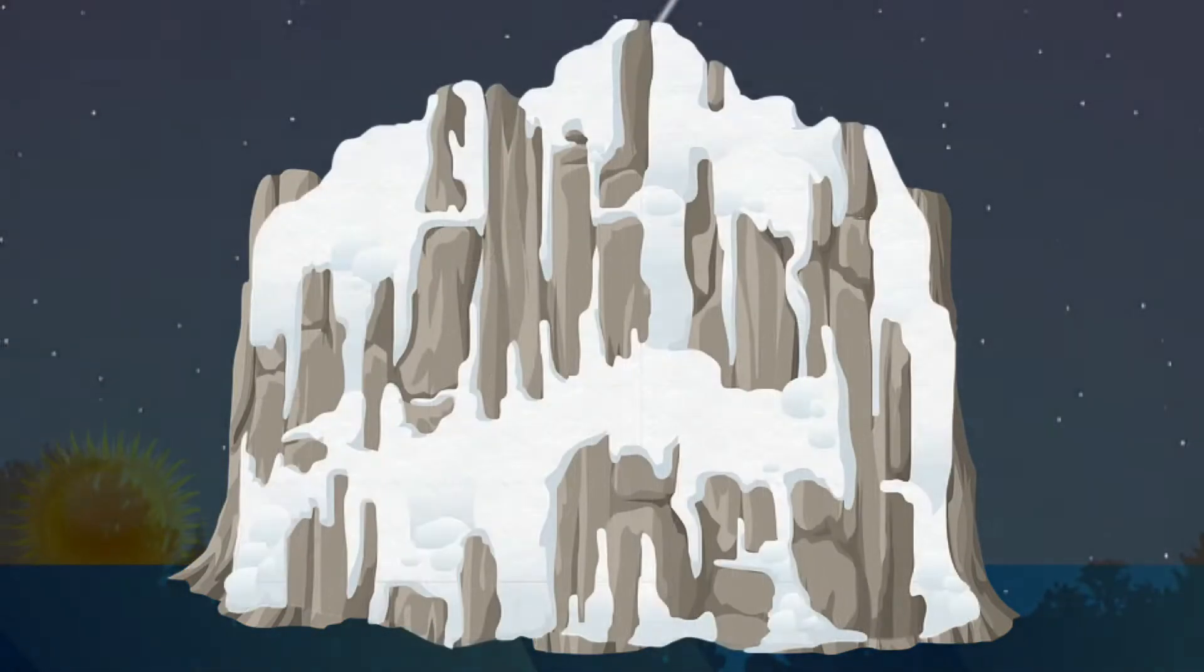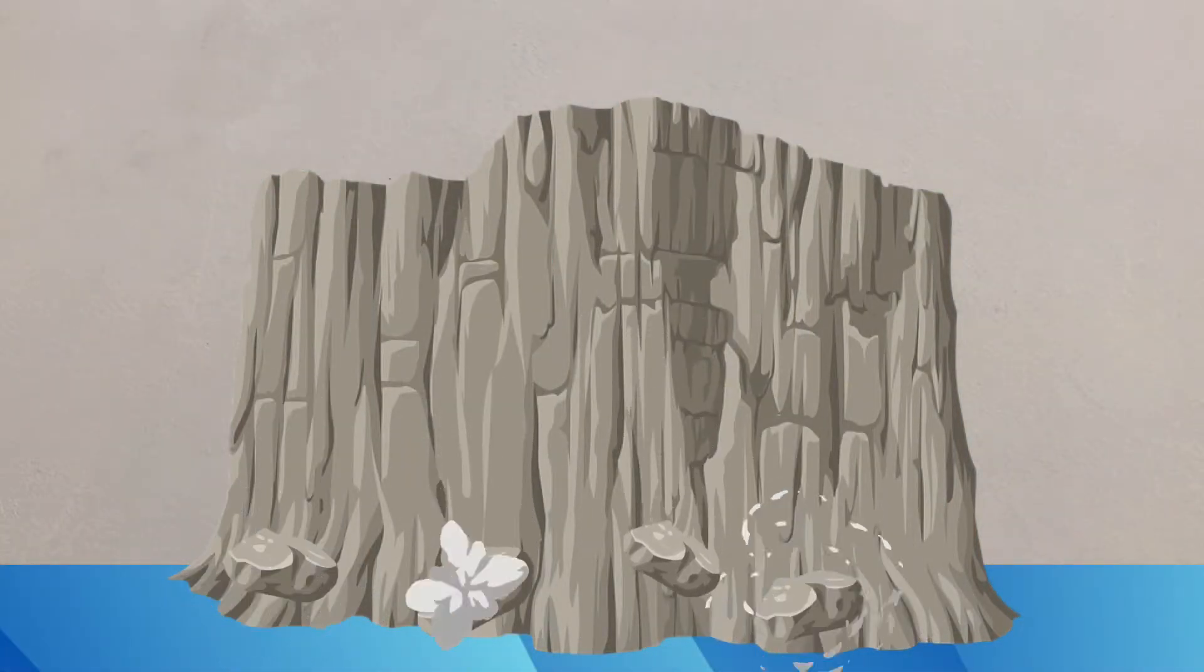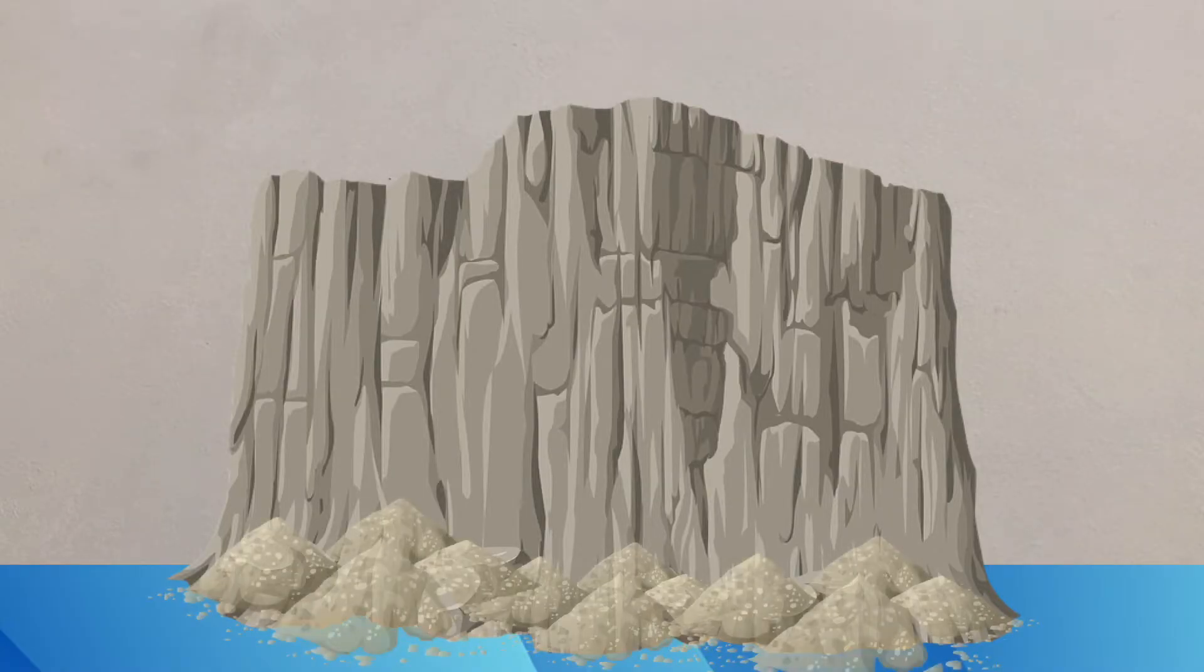Repeating this process over many years will slowly but surely start to fragment the rock until it breaks and disintegrates. Piles of rock fragments called scree can be found at the base of cliffs at the coast where freeze-thaw occurs.